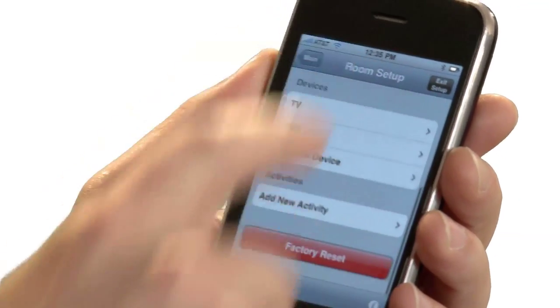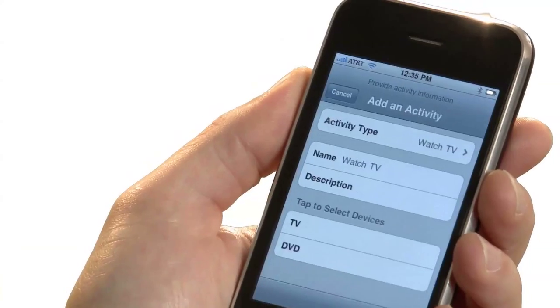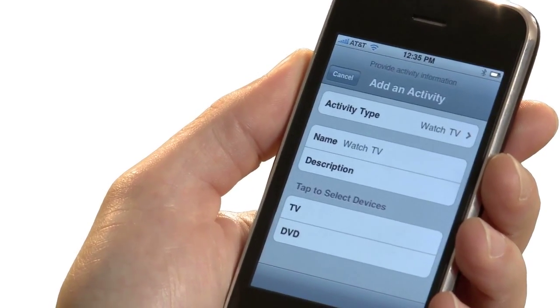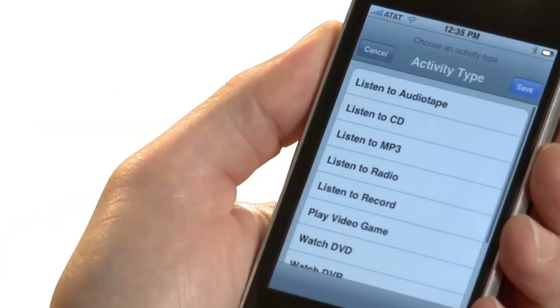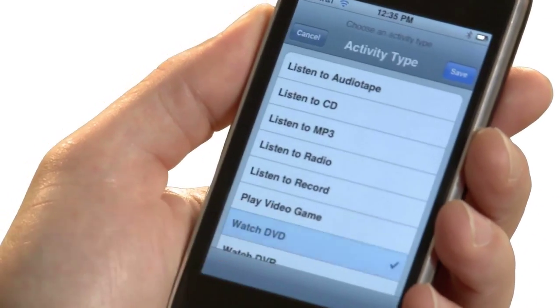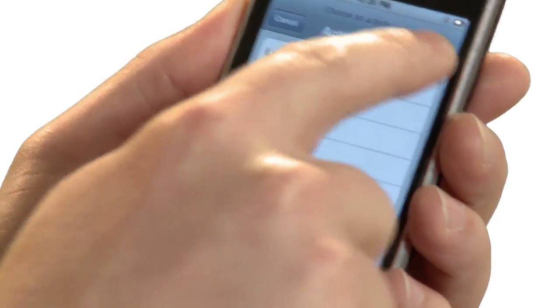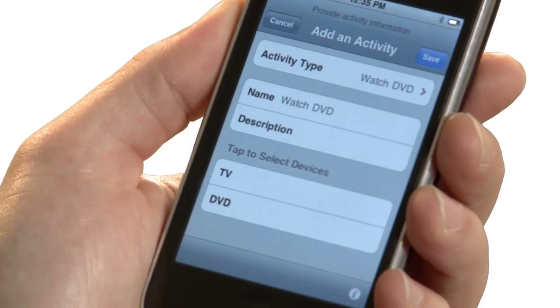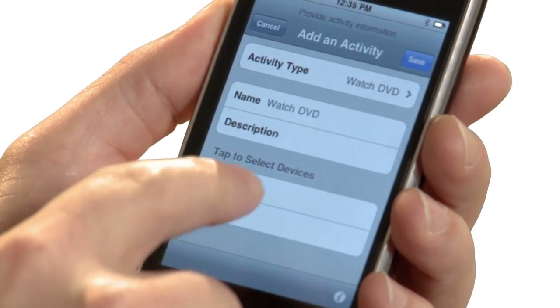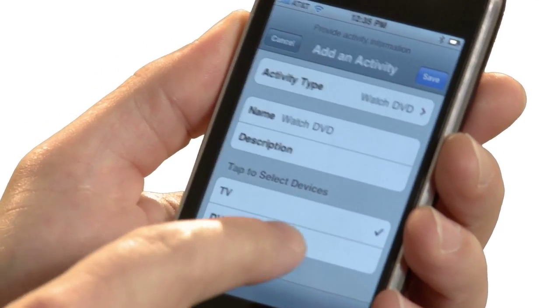Creating an activity is simple. From Room Setup, tap on the Add New Activity row. Choose the activity type. I'll create a watch DVD activity. Select the devices you use with this activity. In my case, that is the TV and the DVD player. And tap Save.